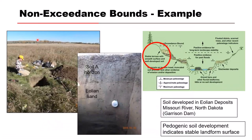Here's an example of a non-exceedance bound from the Missouri River downstream of the Corps' Garrison Dam. Note the eolian sand thickness under the A horizon — it's very stable, there's not much going on other than grass and wind. There's no positive evidence of a flood in this profile. You can see in the figure positive evidence of long-term landscape stability informing our non-exceedance bound.